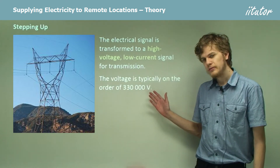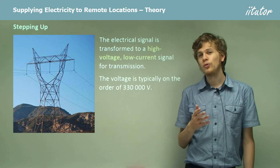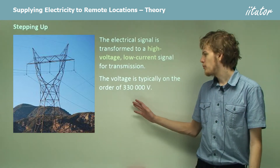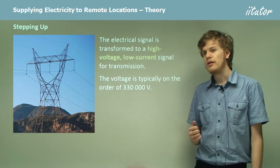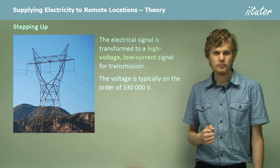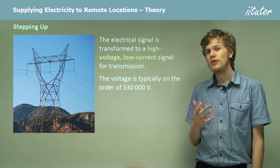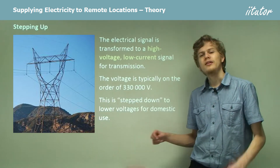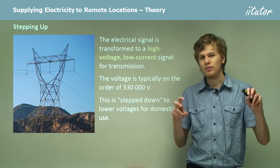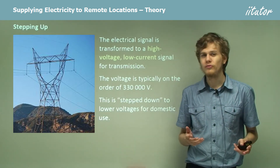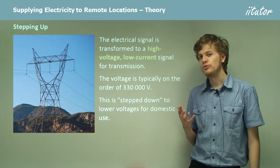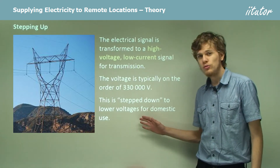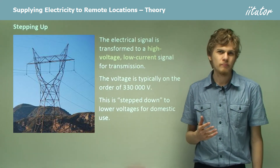The voltage of these high voltage power lines is typically on the order of about 330,000 volts, which is a very large number of volts indeed. This is stepped down to a lower voltage using various electrical devices, and at these lower voltages it's used in the home.